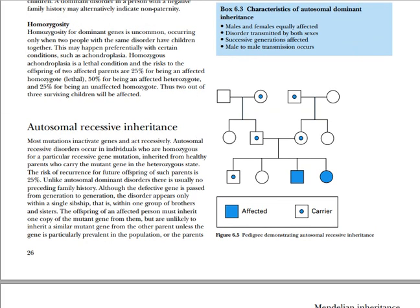Moving to autosomal recessive inheritance: here we introduce the terms 'carrier' and 'affected.' When you are affected, you have a phenotypic effect — you carry the gene and are phenotypically affected. A carrier has the gene but is phenotypically normal. In autosomal recessive disease, you can go two generations without seeing the disease, and it may only appear in the third generation. So it is uncommon to see the disease frequently in a family. That is the typical pedigree pattern of autosomal recessive inheritance.